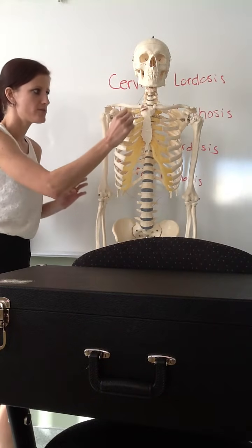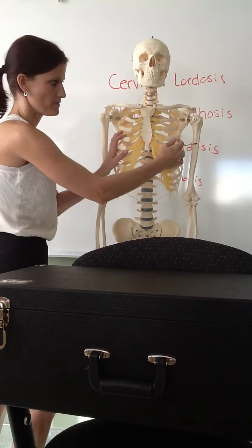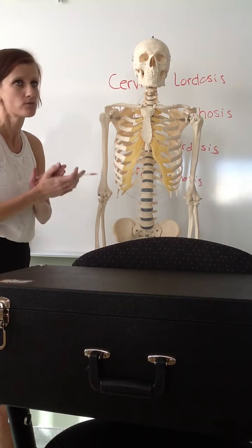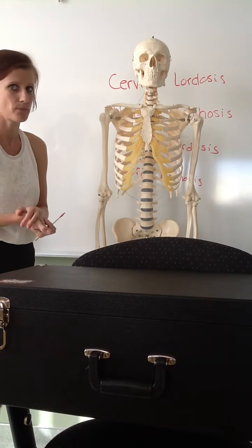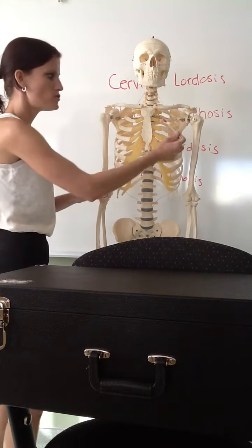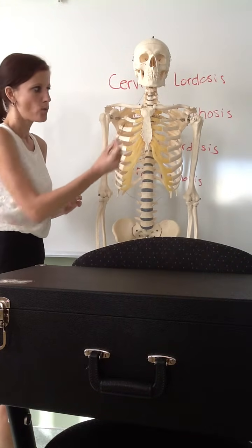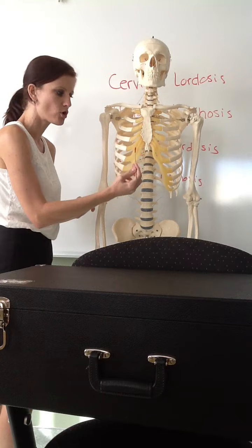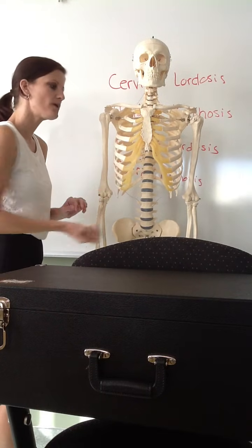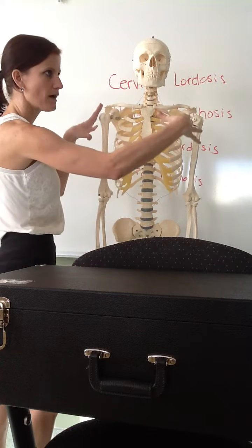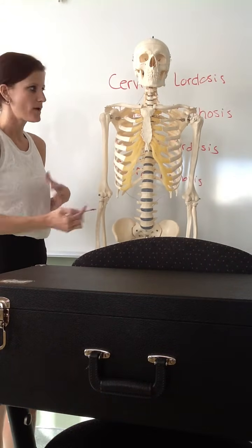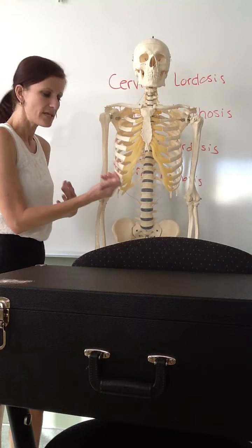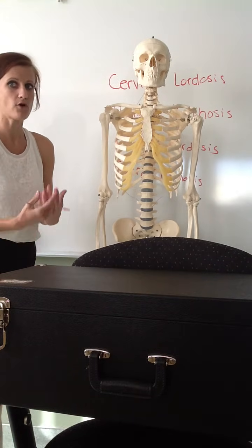Coming off the sternum, we see our ribs. We have 12 pairs of ribs in both males and females. The ribs don't connect directly to the sternum — instead, there is an area of cartilage called the costal cartilages. These cartilages are important because they allow for expansion of the rib cage every time we breathe. So we have 12 pairs of ribs and their corresponding costal cartilages.